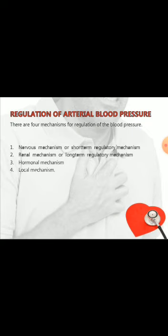There are some mechanisms described for the regulation of blood pressure. The first mechanism is the short-term mechanism, rapidly acting, known as the nervous mechanism. The second one is the renal mechanism, also known as a long-term regulatory mechanism. The third one is the hormonal mechanism, and the fourth one is the local mechanism.